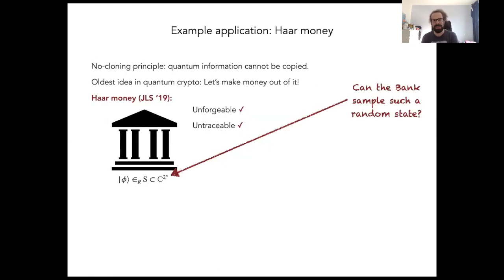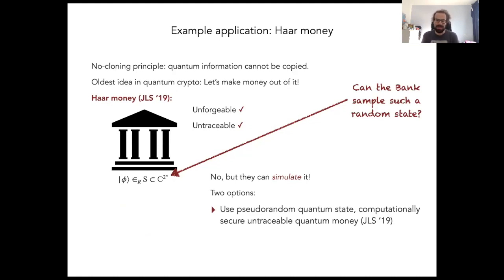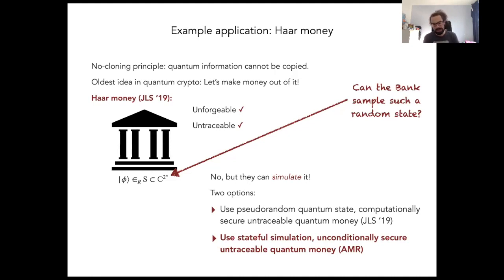Returning to the application of quantum money: if we had a way to sample a Haar random state, we could construct an unconditionally unforgeable and untraceable money scheme. The bank cannot sample such a random state, but it can simulate it. Using a pseudorandom quantum state — as already observed by Ji, Liu, and Song — yields a quantum money scheme that is unforgeable and untraceable, but only computationally against polynomial-time adversaries. With our new stateful simulation technique, we can now simulate a Haar random state statelessly — and thereby obtain an unconditionally secure and untraceable quantum money scheme.